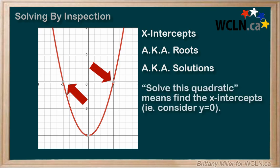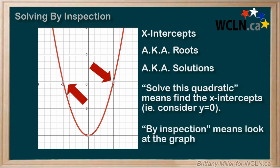When you are asked to find the solutions, or solve a quadratic, you are being asked to find the x-intercepts. There are a few ways we're going to do this, and one of the easiest ways is by inspection. This is a fancy way to say we figured it out by looking at the graph.